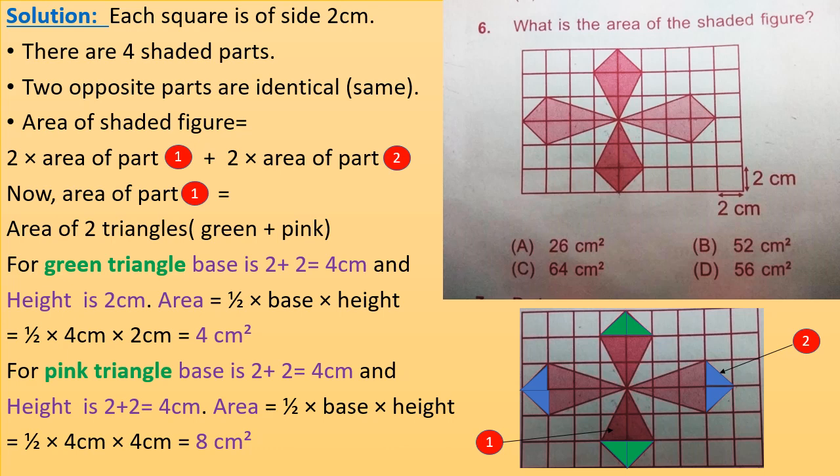Now for the second question: what is the area of the shaded figure? I will demonstrate the second method. Each square is of side 2 cm. There are four shaded parts; two opposite parts are identical. I have divided the shaded region into two parts — part one and part two.